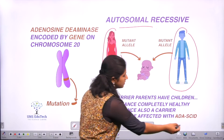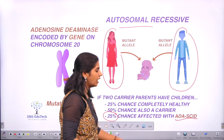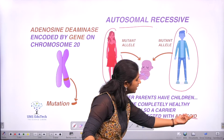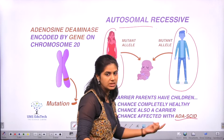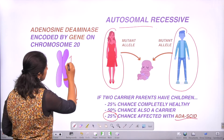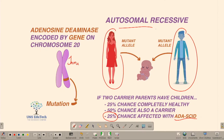The symptom is ADA-SCID — adenosine deaminase severe combined immunodeficiency. Immunodeficiency means the individual will not have a proper immune system; the immunity will be very low.